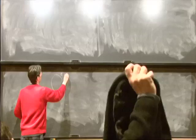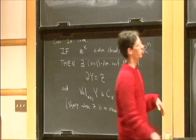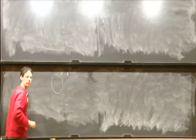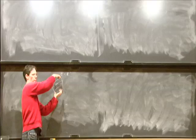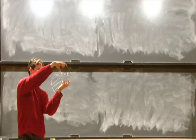So for example, if Z is this loop in R3, then one surface that it bounds is that disk, which obeys the inequality. Another surface that it bounds is a hemisphere sticking out of the board, which isn't quite as good, doesn't quite obey the inequality. Another surface that it bounds is a very long sort of ellipsoid sticking out of the board, and that has a huge area. It doesn't obey the inequality at all.